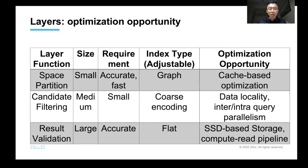In the candidate filtering layer, we want to store all the data within limited memory usage. Therefore, we can use encoding-based index and explore optimization opportunities such as data locality and parallel data processing.